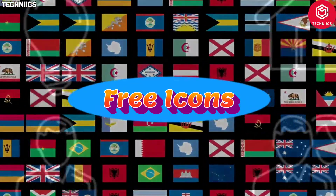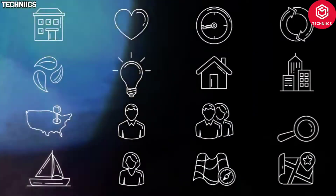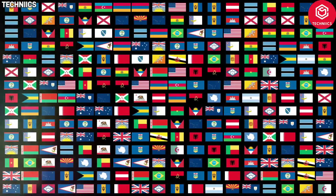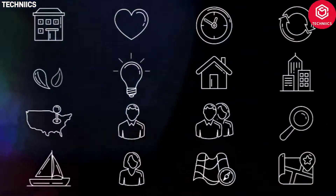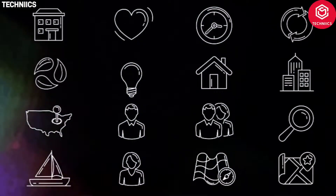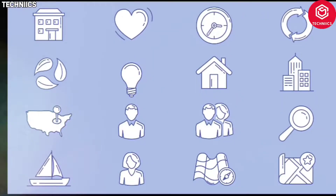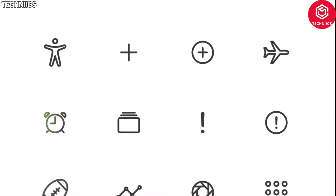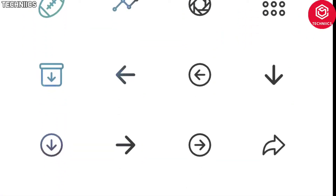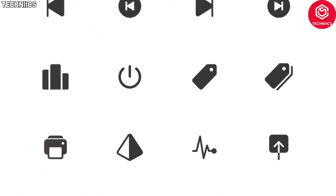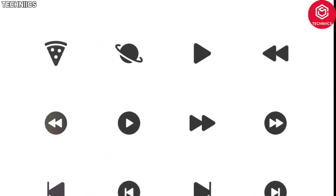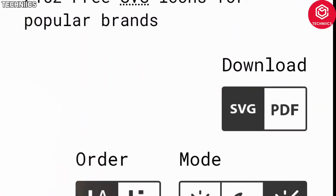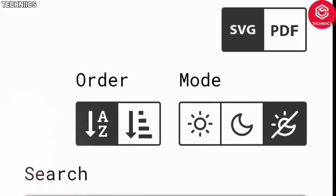Free Icons. Icons might be the smaller of design elements, but that doesn't mean they're any less important. We've scoured the web to pick some of the best resources for free icons, no matter the theme in question. Ion Icons. Over 1,300 open-source icons, lovingly hand-crafted for use in web, iOS, Android, and desktop apps. Built by the Ionic Framework team, they're all free and open-source.